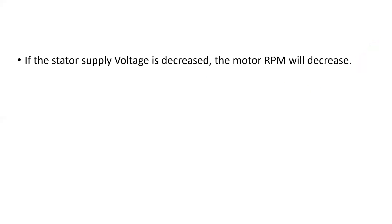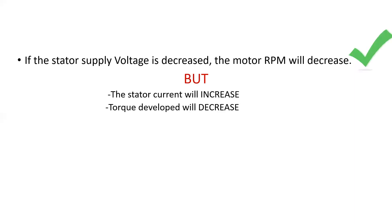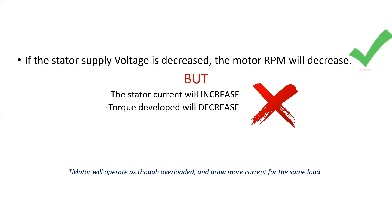If the stator supply voltage is decreased, the motor RPM will decrease as well. However, exactly the same problems occur — the stator current will go up and the torque developed will decrease. In effect, the motor will operate as though it's overloaded and draw more current for the same load.